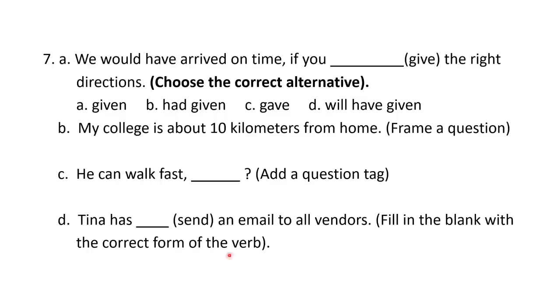Seventh question. A: 'We would have arrived on time if you ___ the right directions.' Choose the correct alternative from: given, had given, gave, or will have given. This question is from the third unit on conditionals. The answer is 'had given.' We would have arrived on time if you had given the right directions.